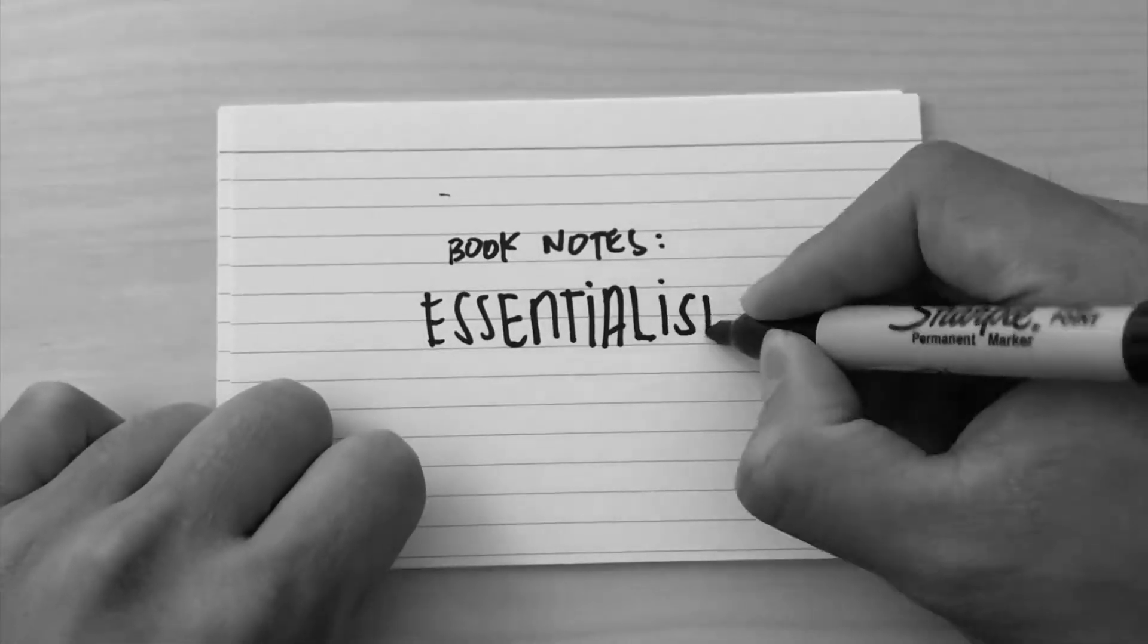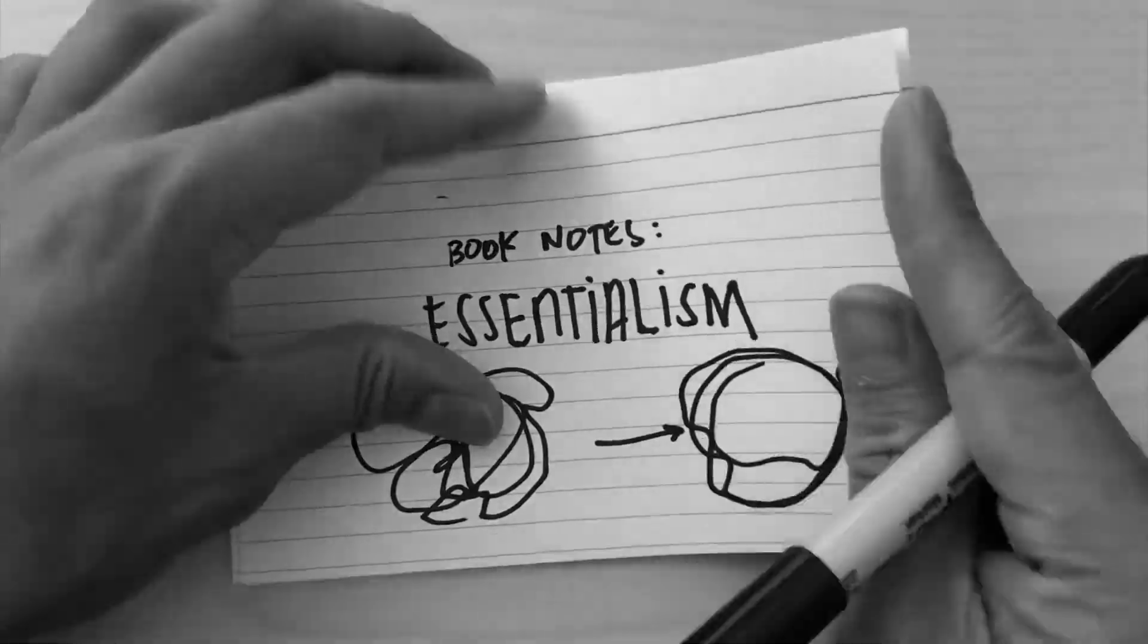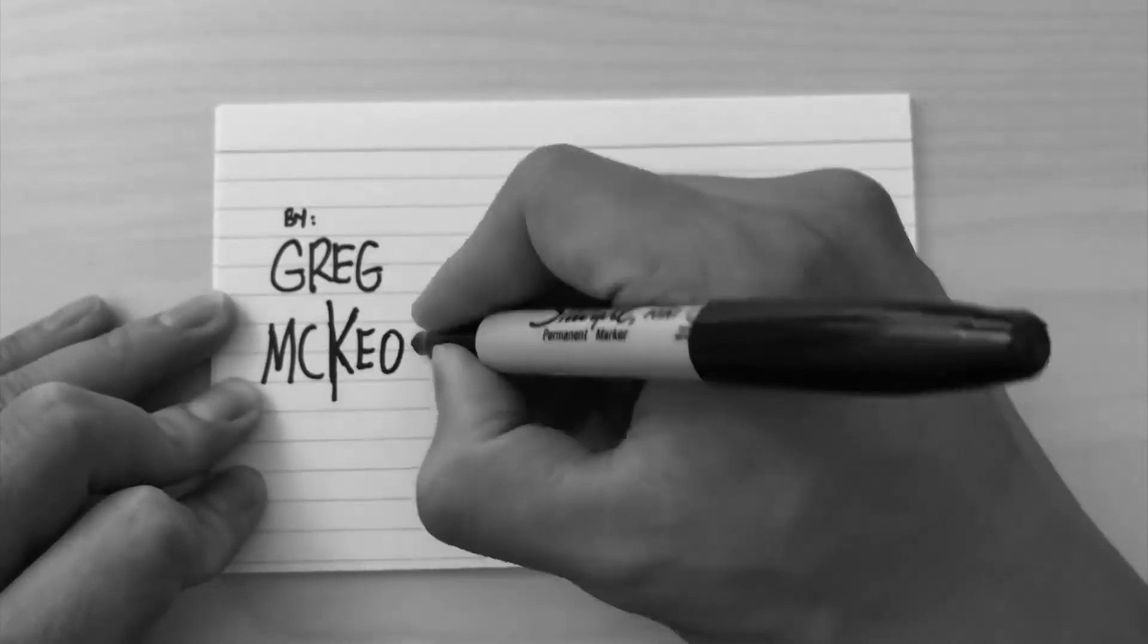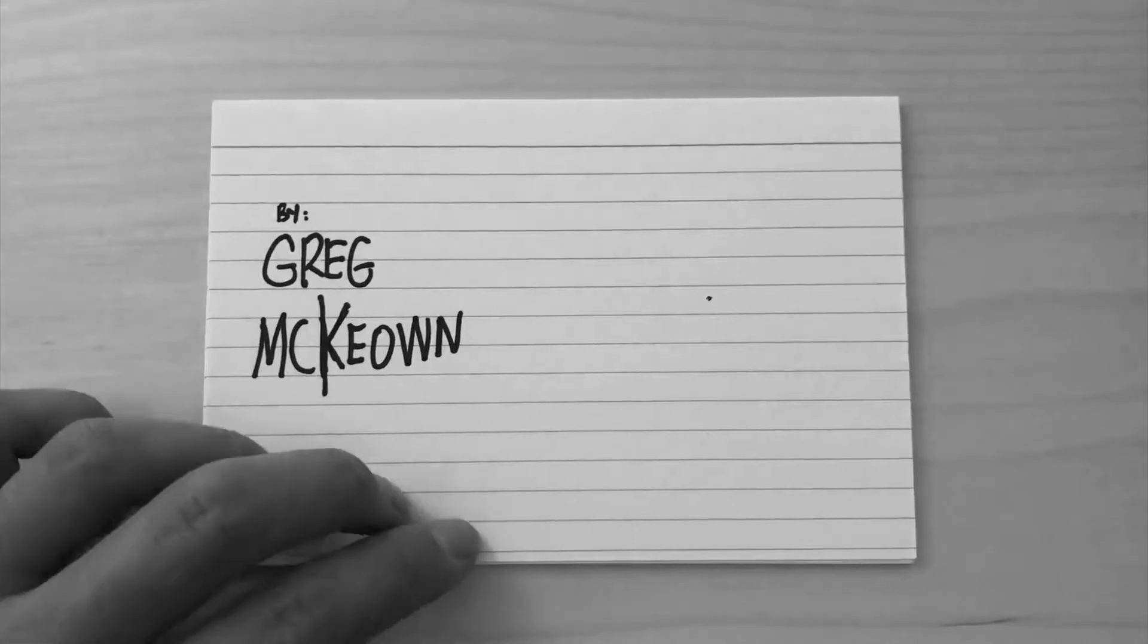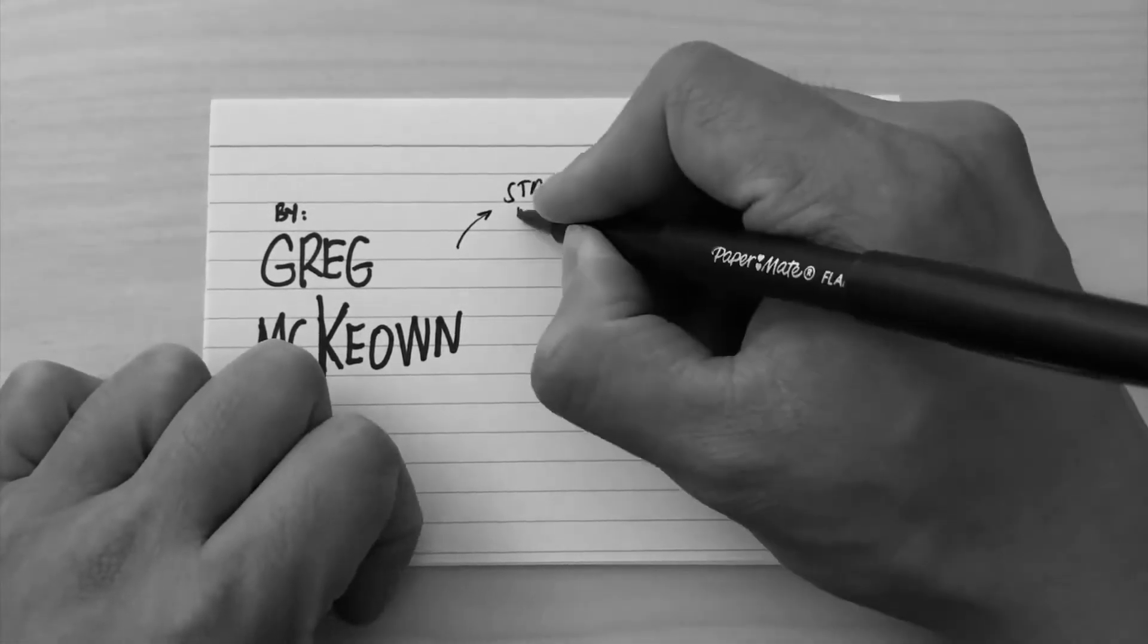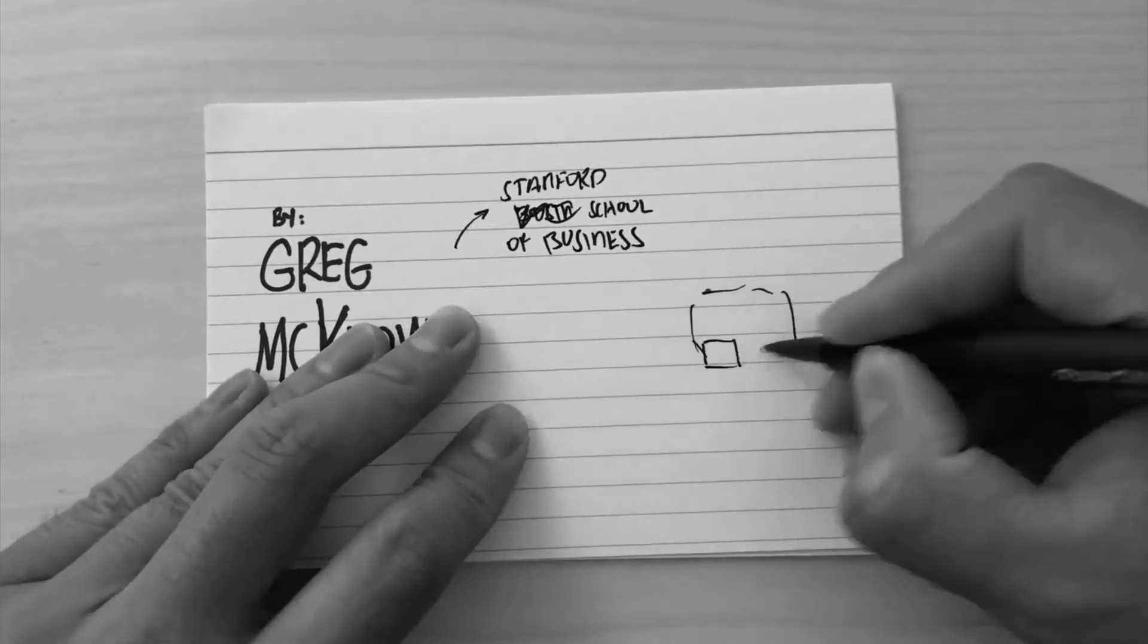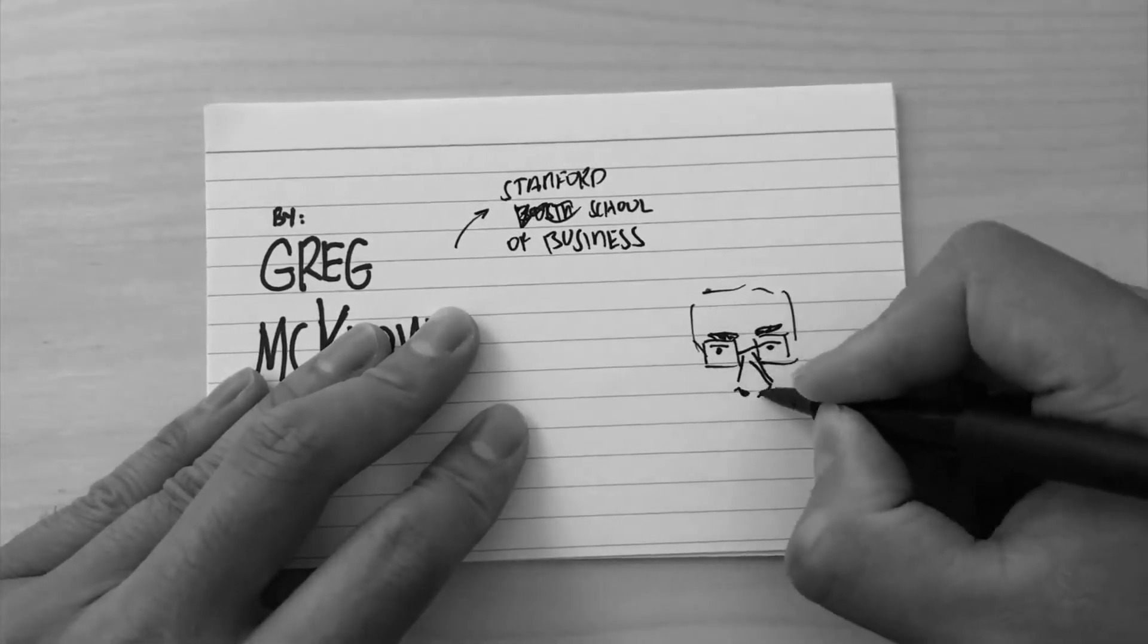These are book notes for the book Essentialism by Greg McKeown from Stanford Business School. I'm going to skip through this drawing of him because it didn't turn out that great.